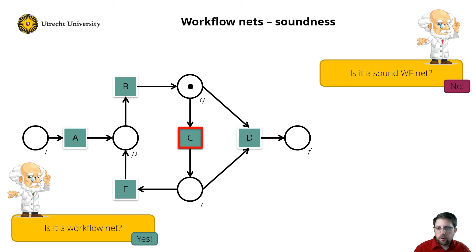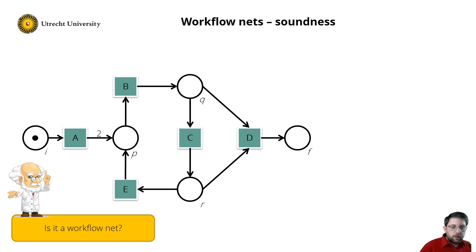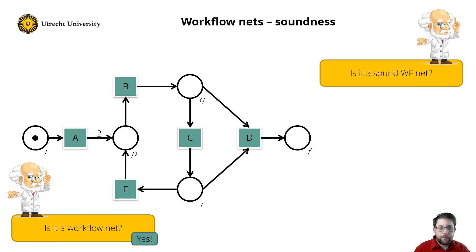So let's quickly change this and add a 2 on the arc between transition a and place p. So is it a workflow net? Well, yes, it's the same net as before.